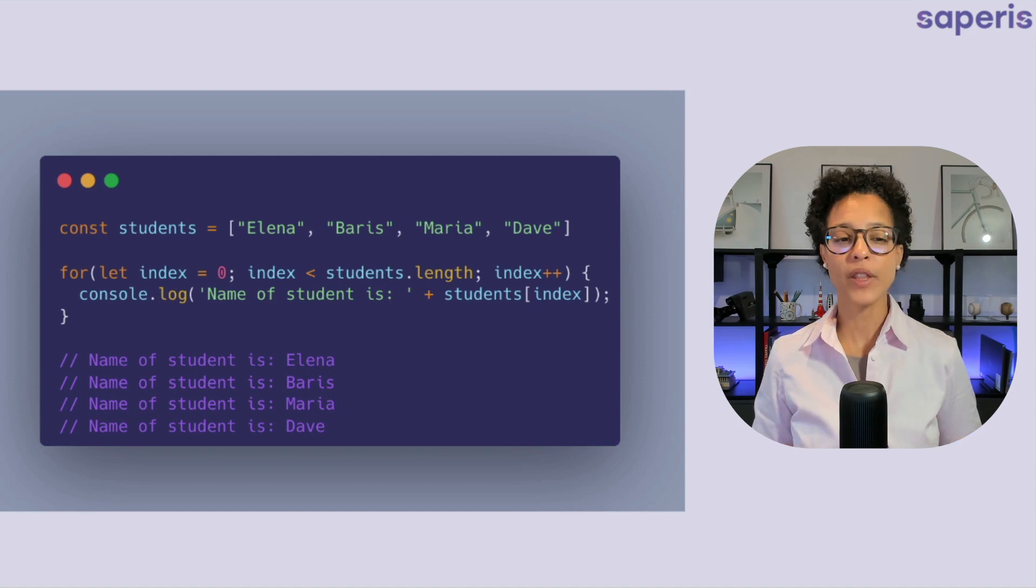Now as you can see there's a lot of elements to get this for loop running correctly and that's why I would like to deep dive into it so that you understand what each of these elements do.